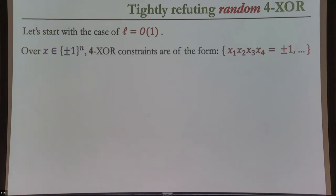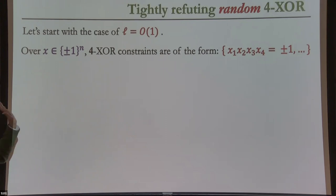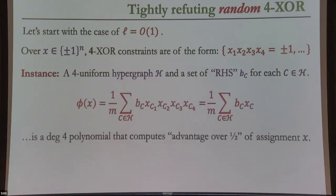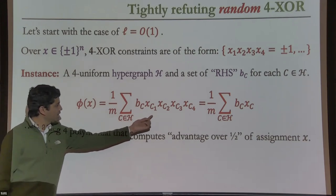Let's start with L = O(1), meaning I want to refute N^{K/2} = N^2 or more constraints for K=4. For 4XOR constraints, I'll work with ±1-valued variables. Then 4XOR constraints correspond to monomial constraints: I want the product of four bits to be +1 or -1 depending on the right-hand side. Given a set of 4XOR constraints, I write down a 4-uniform hypergraph and a ±1 weight on each hyperedge.